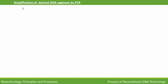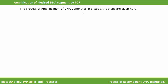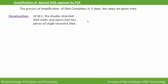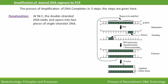The process of amplification of DNA completes in three steps. The first step is denaturation. It occurs at 94 degrees centigrade temperature. As you can see in the diagram, at the denaturation step heat is required — meaning it occurs at the highest temperature, 94 degrees centigrade — and the double-stranded DNA melts and opens into two single-stranded DNA molecules.